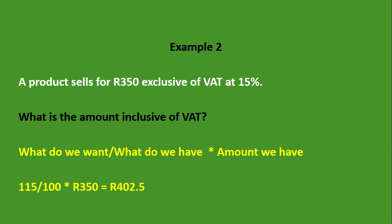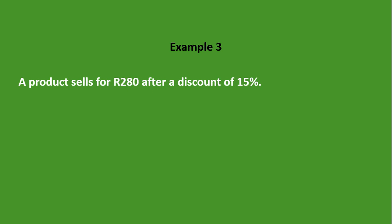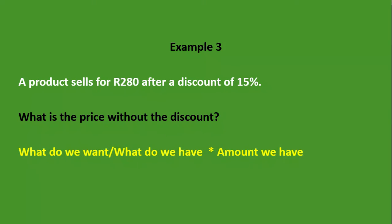Let's look at the third example. A product sells for 280 rand after a discount of 15 percent. What is the price without the discount? Using our formula: what do we want? The price without the discount, which is 100 percent. What do we have? We have a product that sells for 280 rand after a discount of 15 percent, so 100 percent minus 15 percent gives us 85 percent. That 280 rand is worth 85 percent. So the formula is: 100 divided by 85, times 280 rand.